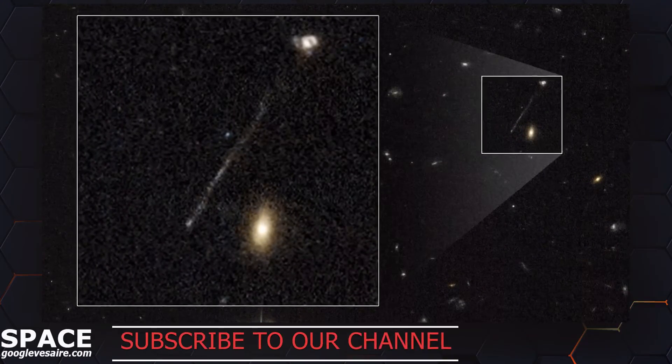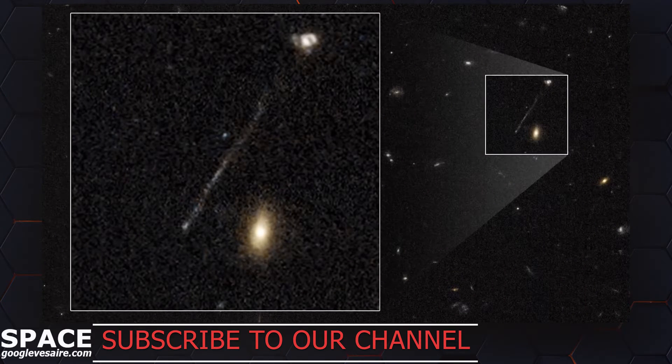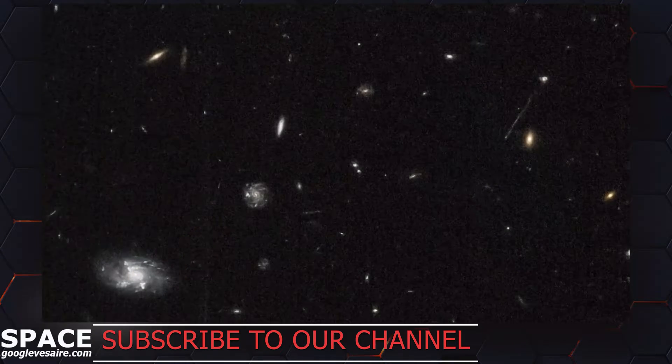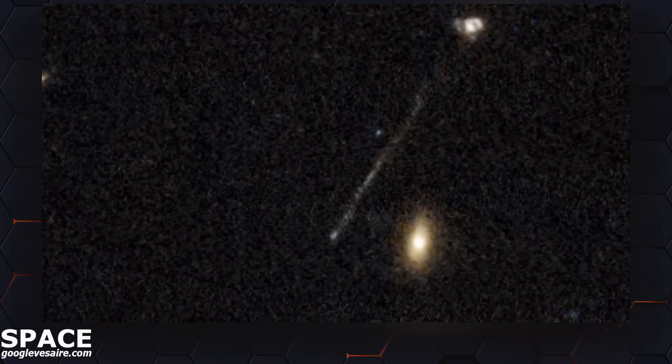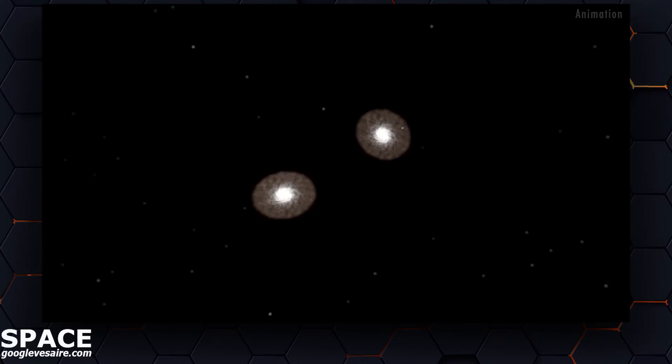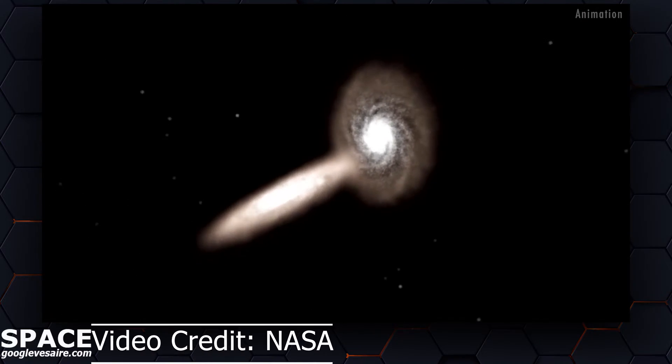It's likely the result of a rare, bizarre game of galactic billiards among three massive black holes. Astronomers suspect that first two galaxies merged, perhaps 50 million years ago. That brought together two supermassive black holes at their centers; they whirled around each other until another galaxy came along with its own supermassive black hole.